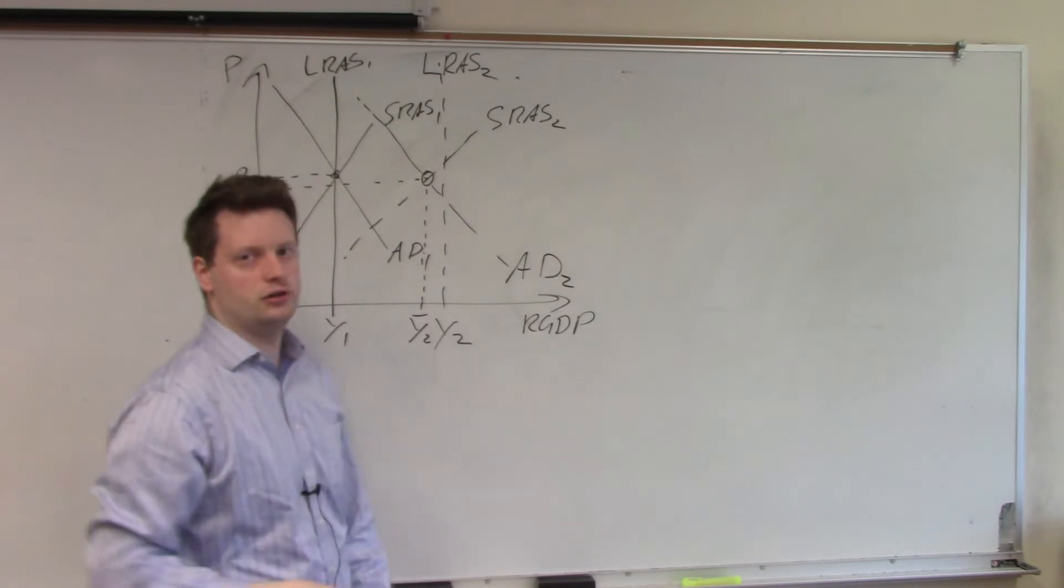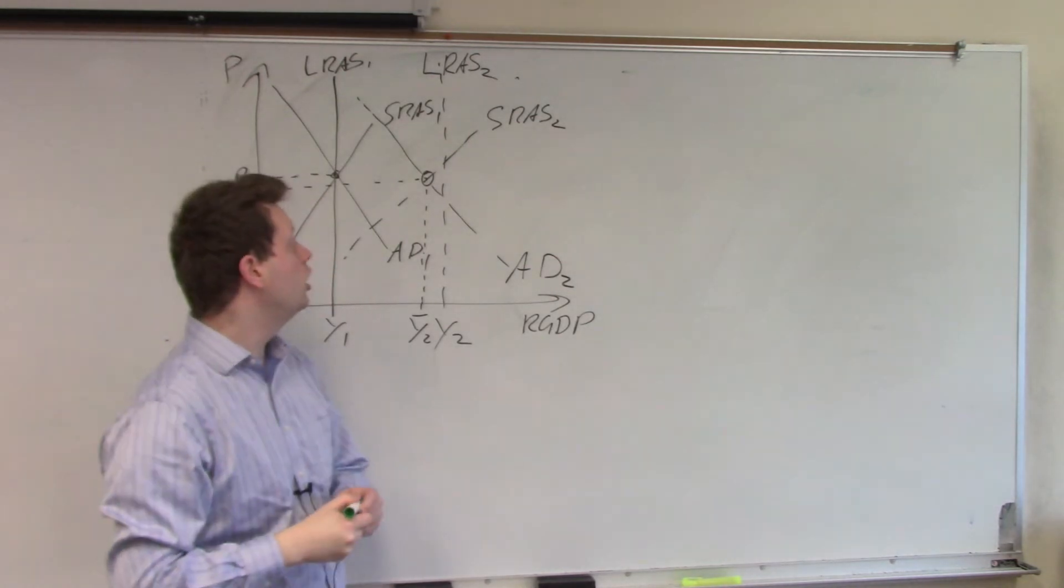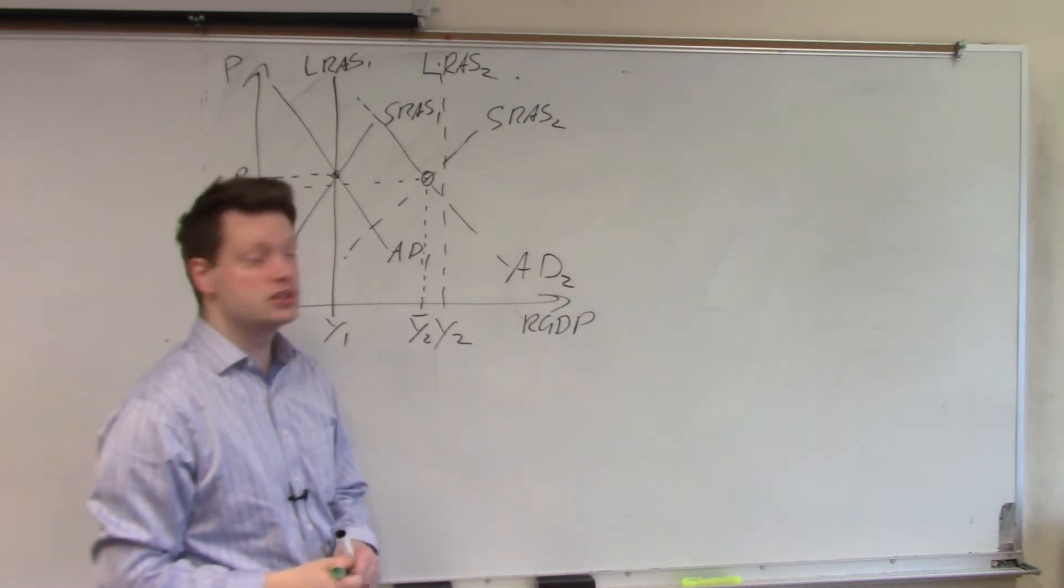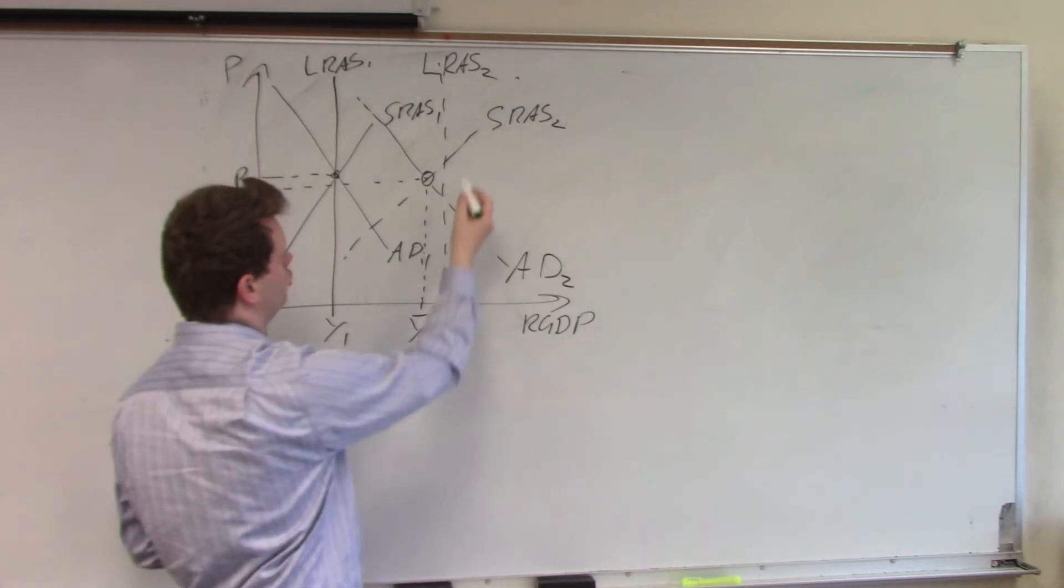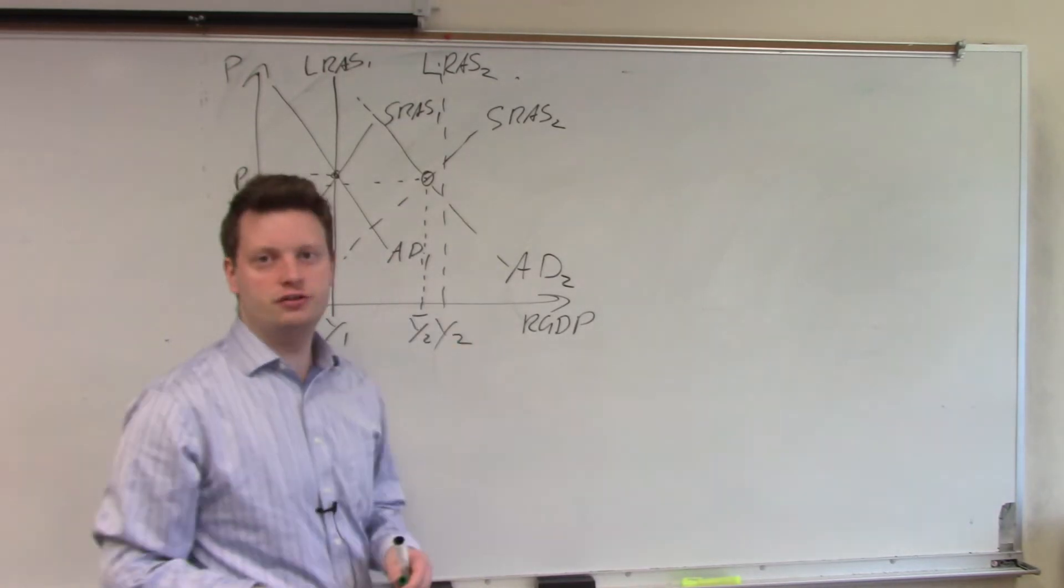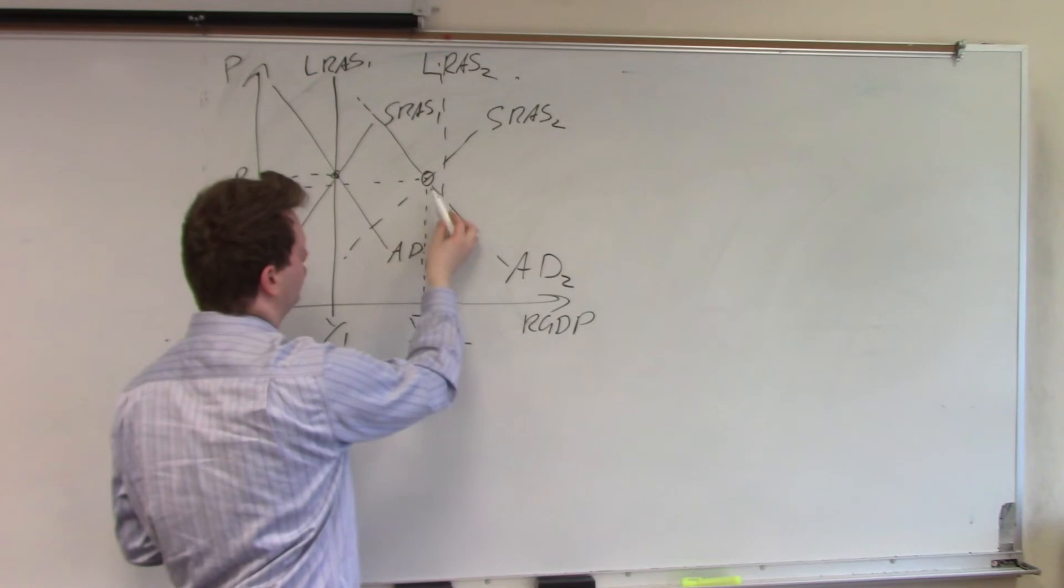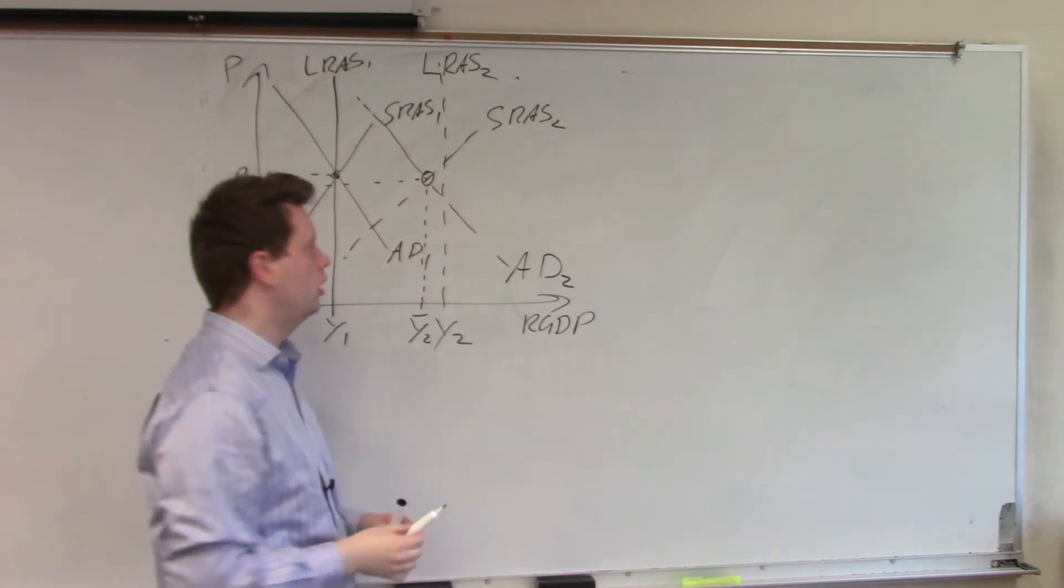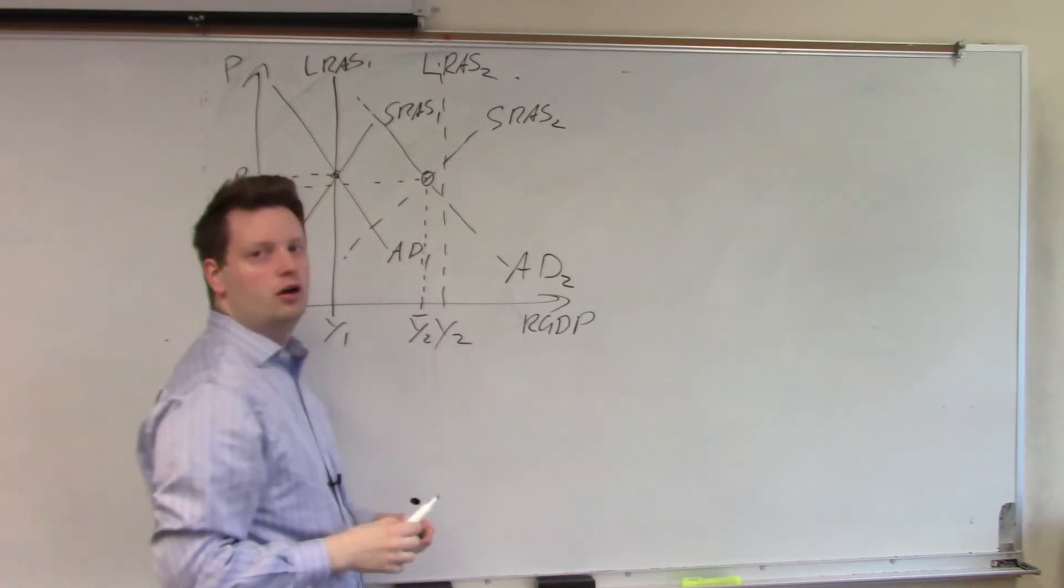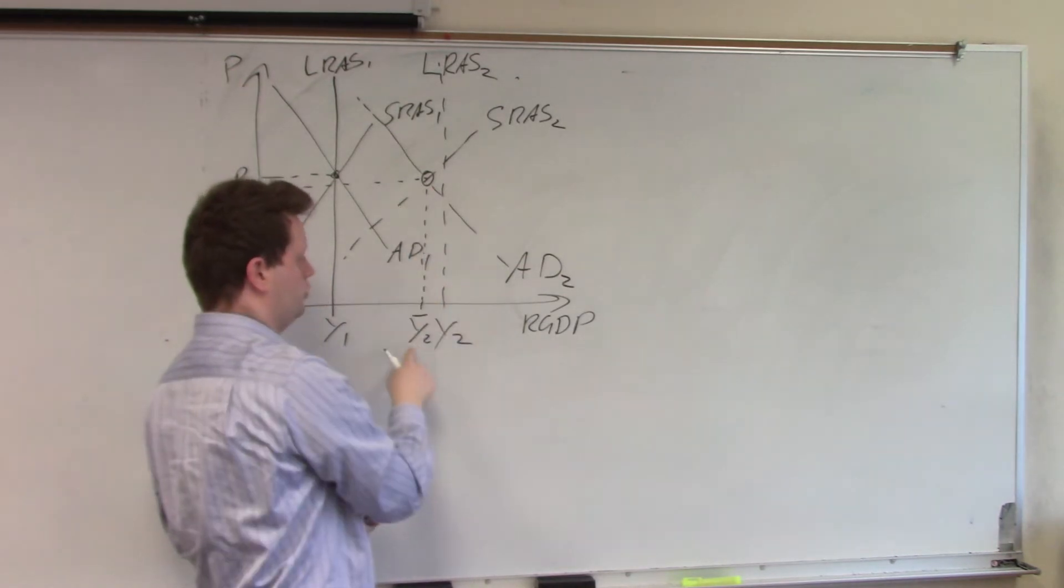Now, in this model, if we let the economy do whatever it does, what will happen is the short-run aggregate supply curve will shift because we are currently below this potential. Our potential is Y2 here but we are only at Y2 bar.